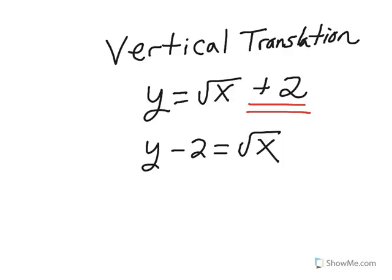You see? You're equivalent expressions. That's how we're getting the vertical translation. By subtracting 2 from the y side, we are, in essence, shifting the graph up positive 2 units.